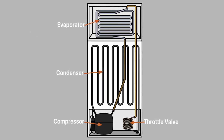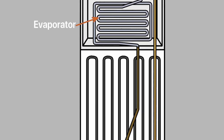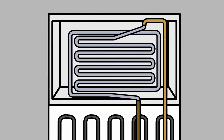The main purpose of the vapor compression refrigeration system is to create a continuously cooling effect in the evaporator. The evaporator is the component where the cooling or refrigeration takes place.